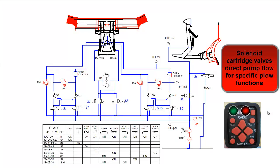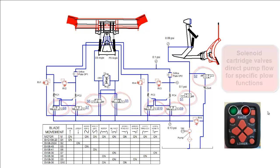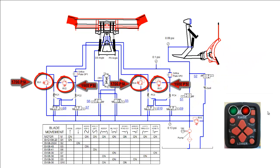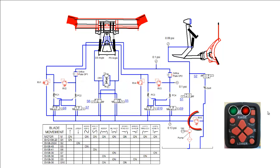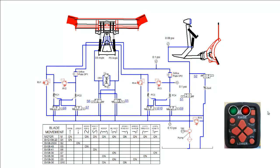There are 8 solenoid cartridge valves, which are labeled S1, S2, and S5 to S10. There are 4 wing relief valves, which are labeled RV1 to RV4. There is one main pump relief valve, which is labeled RV5. There is one crossover relief valve, which is labeled CR1.